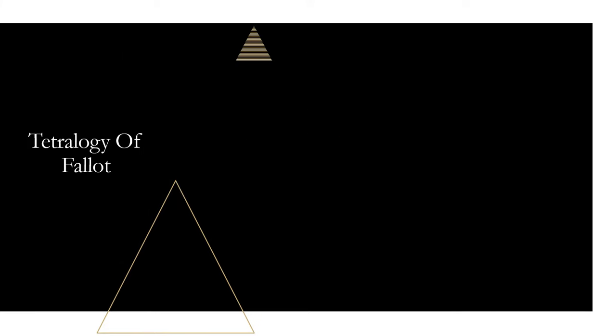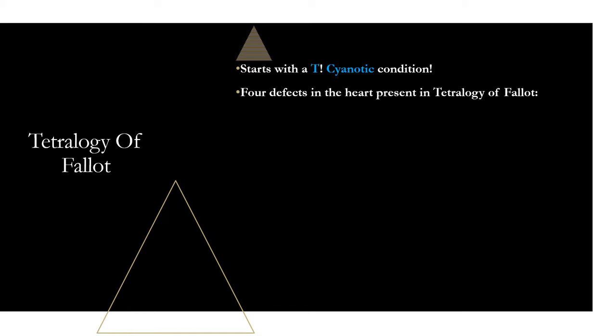Moving on to Tetralogy of Fallot — this is our first cyanotic condition. It starts with a T, so think turquoise, which is blue — it's a cyanotic condition. It's the only cyanotic condition included in the congenital heart diseases from the NCCPA blueprint. It has four different defects in the heart, and you need to know each one. The four defects are: right ventricular outflow obstruction, right ventricular hypertrophy, overriding aorta, and VSD.